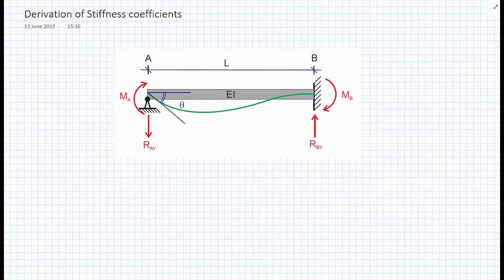In this video, we're going to use the unit load or virtual work method to calculate the unknown moments and reaction forces on a beam element, and subsequently go on to calculate the deflections on an indeterminate structure.